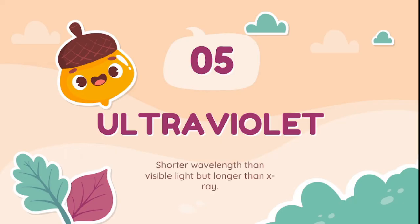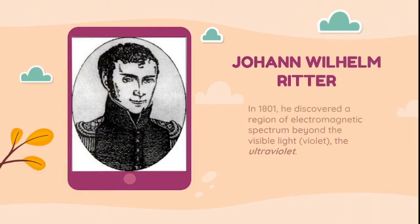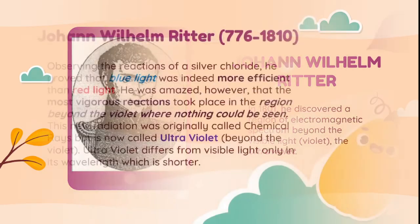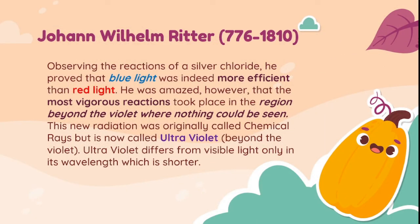Moving on, let us now proceed to ultraviolet. Ultraviolet was discovered by Johann Wilhelm Ritter in 1801. Observing the reactions of silver chloride, he proved that blue light was indeed more efficient than red light. He was amazed, however, that the most vigorous reactions took place in the region beyond the violet where nothing could be seen. This new radiation was originally called chemical rays, but is now called ultraviolet — meaning beyond the violet.